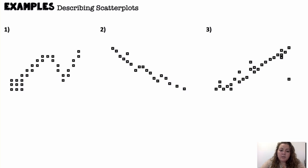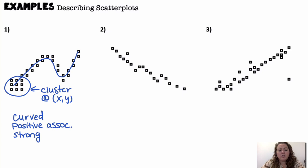Describe the scatter plot. So, we have three different scatter plots here. This first one, I'm going to say it has a cluster at this section here. It also follows a curve pattern. So, it's curved. It looks like it has a positive association. At the end, it's going upward. And, it's pretty strong. If you draw that curve to it, the points are pretty close to that curve.